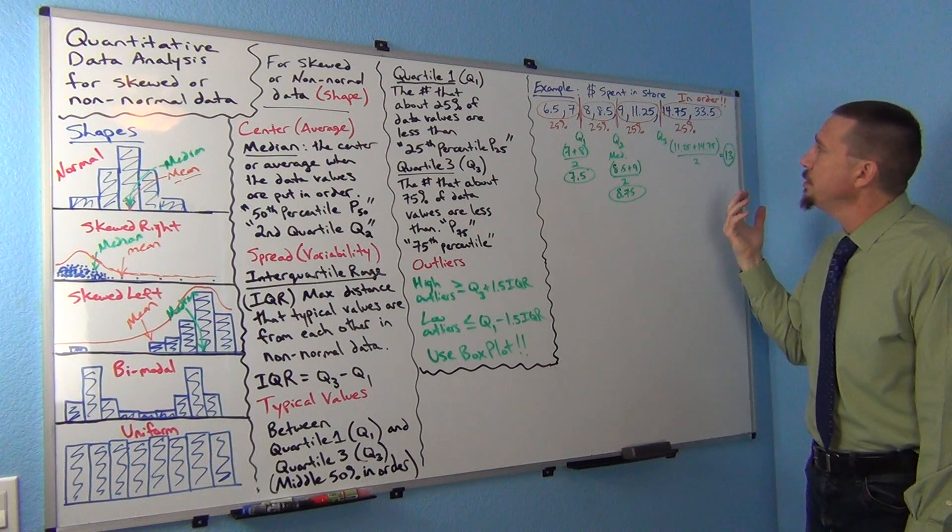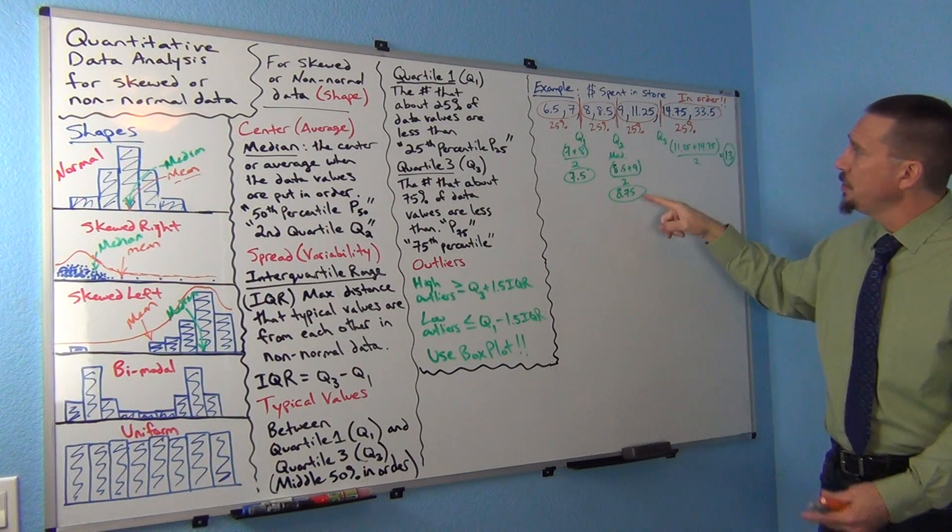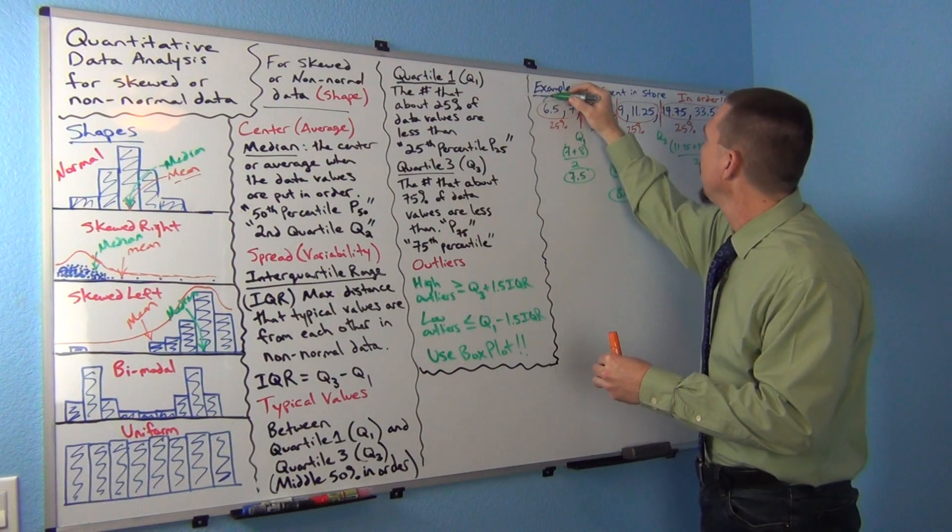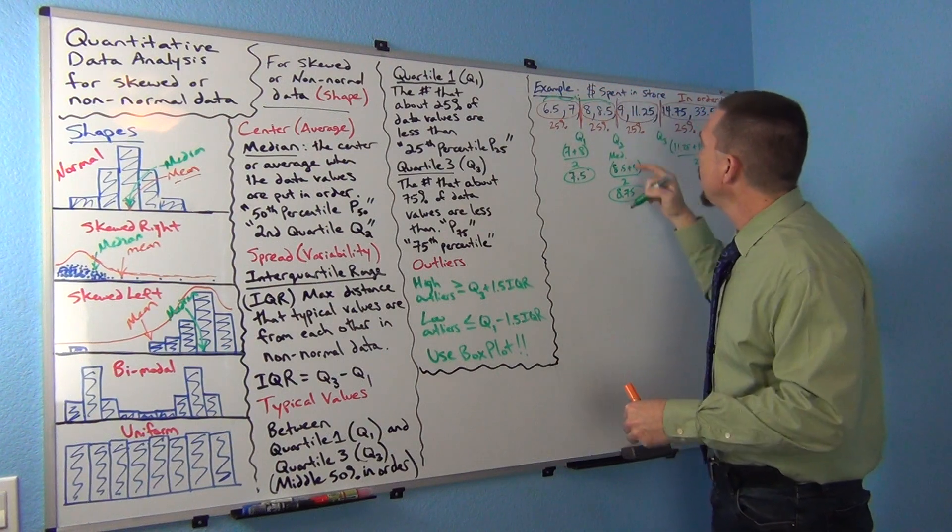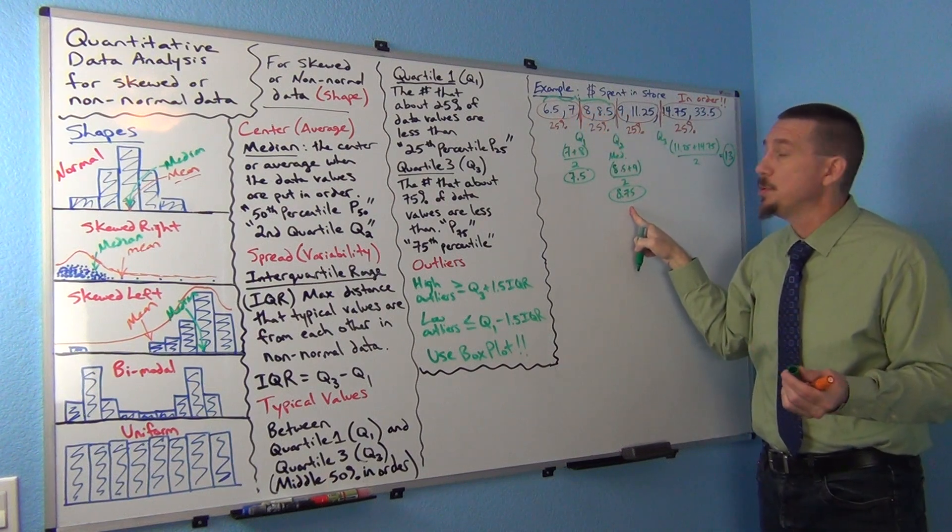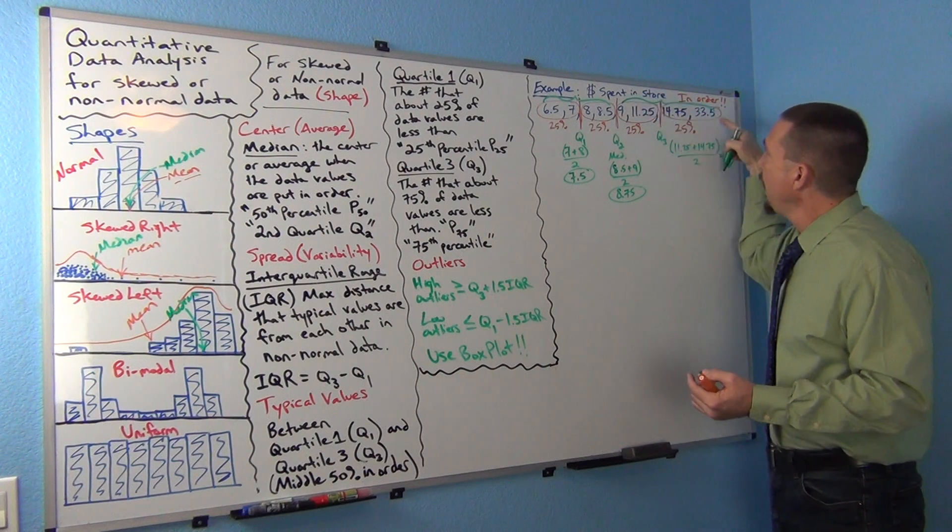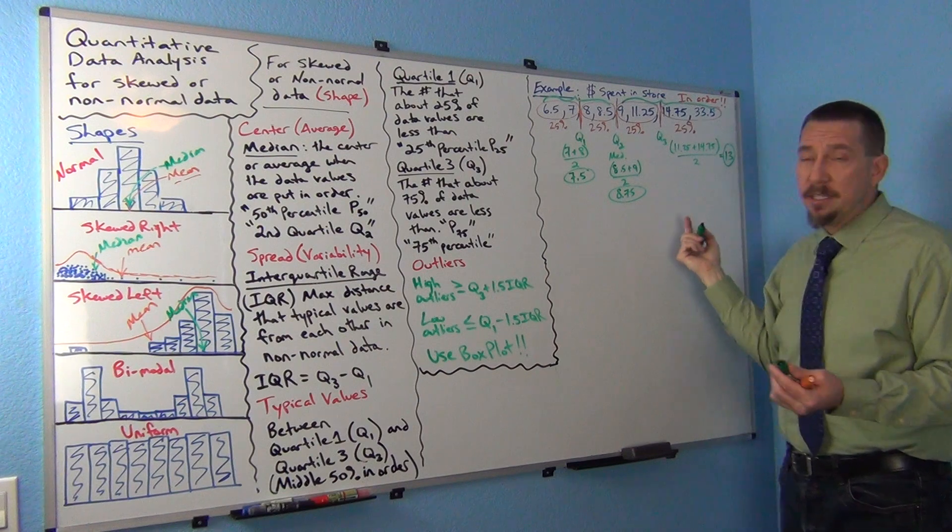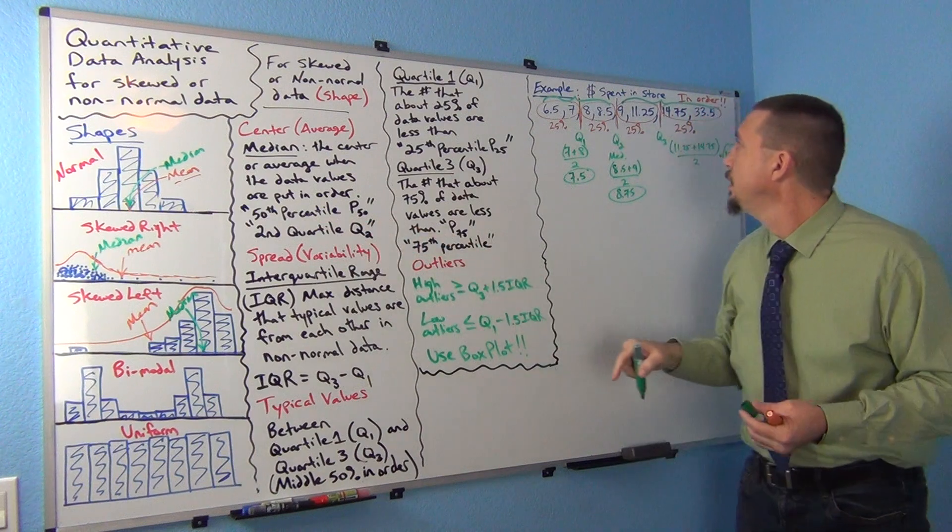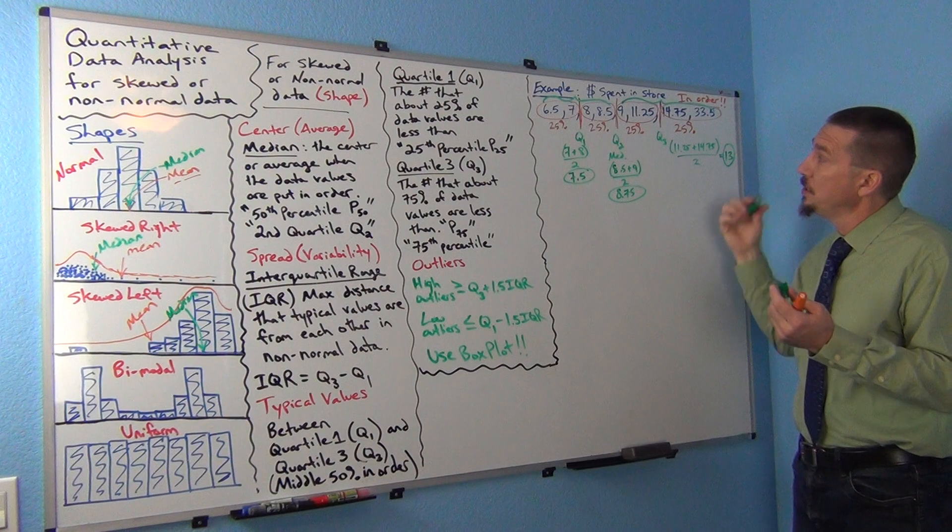A lot of times you can find the median first, get the 8.75. If you notice, the median breaks the data into the top half and the bottom half. These four numbers are the bottom half - all the numbers below 8.75 is about 50% of the data. And these four numbers are the top half of the data, the top 50%. That's why we said the median is also called the 50th percentile. It's a divider that about 50% of the numbers are less than and about 50% are greater than.